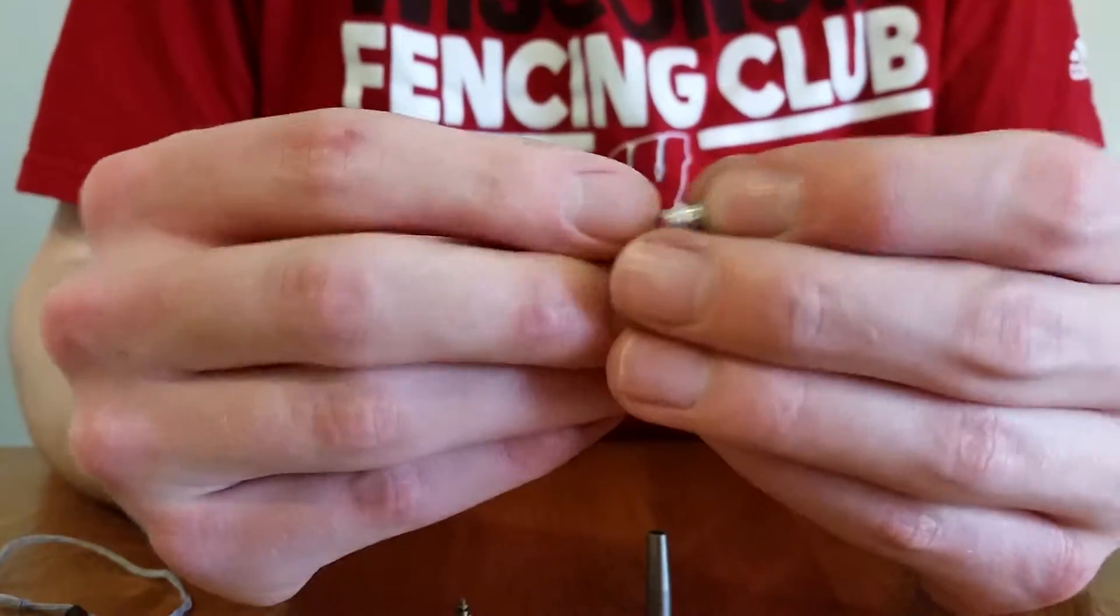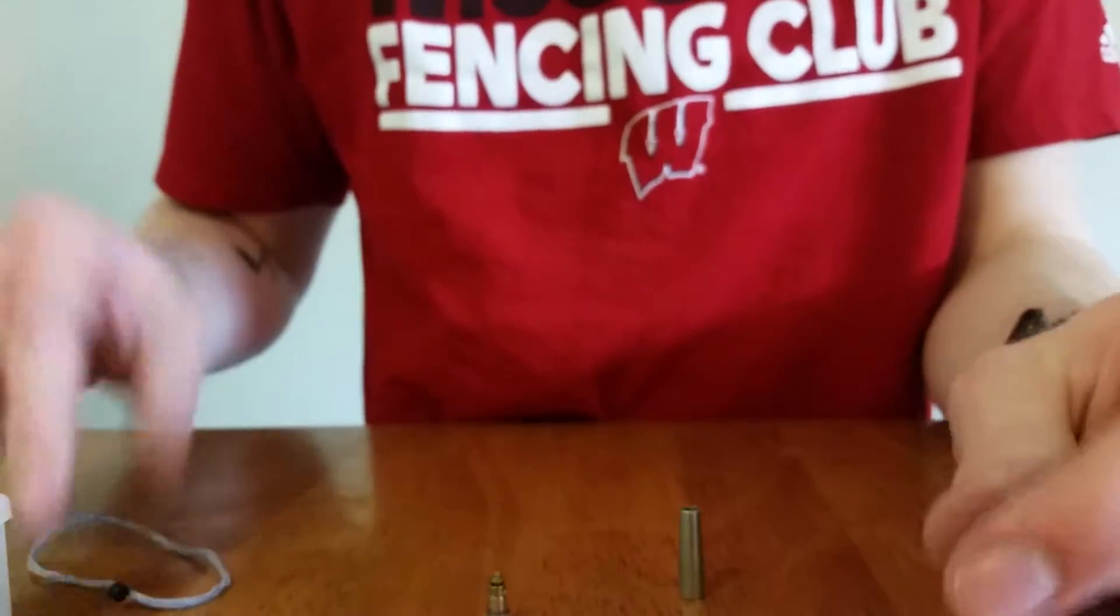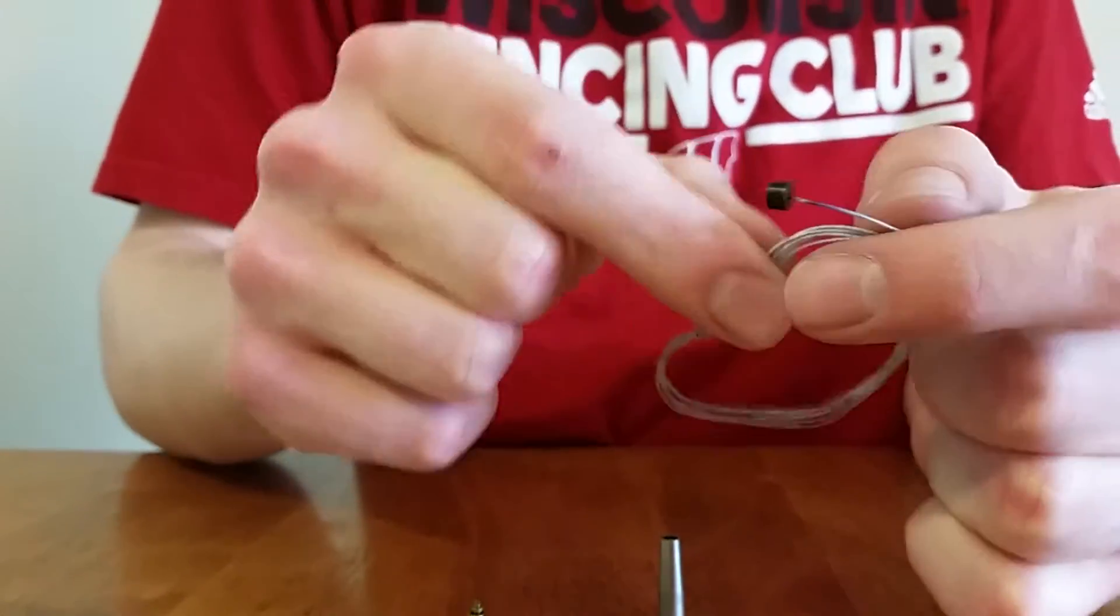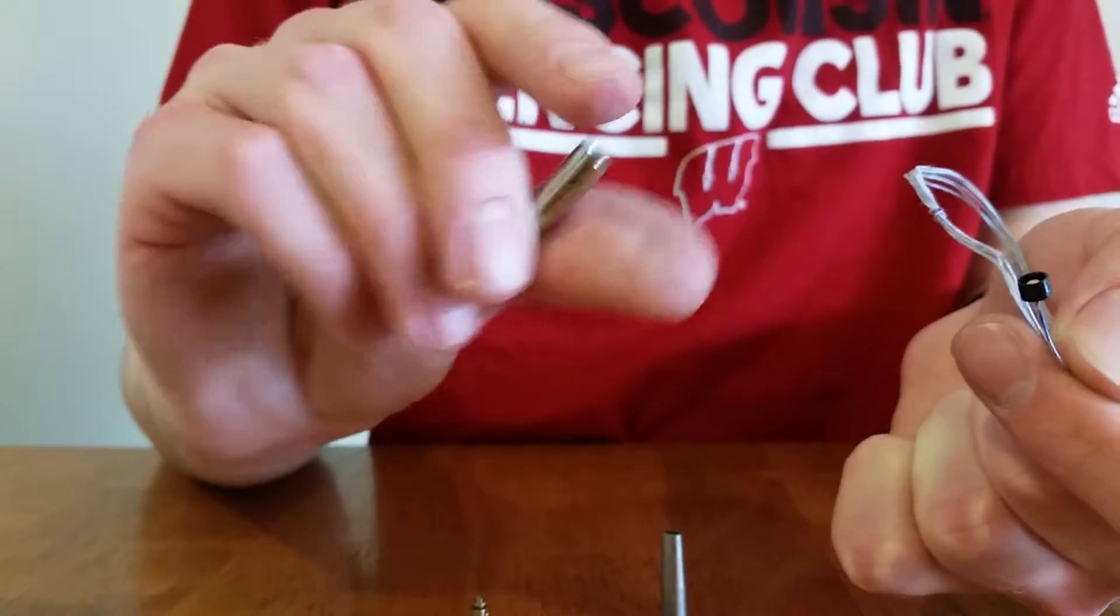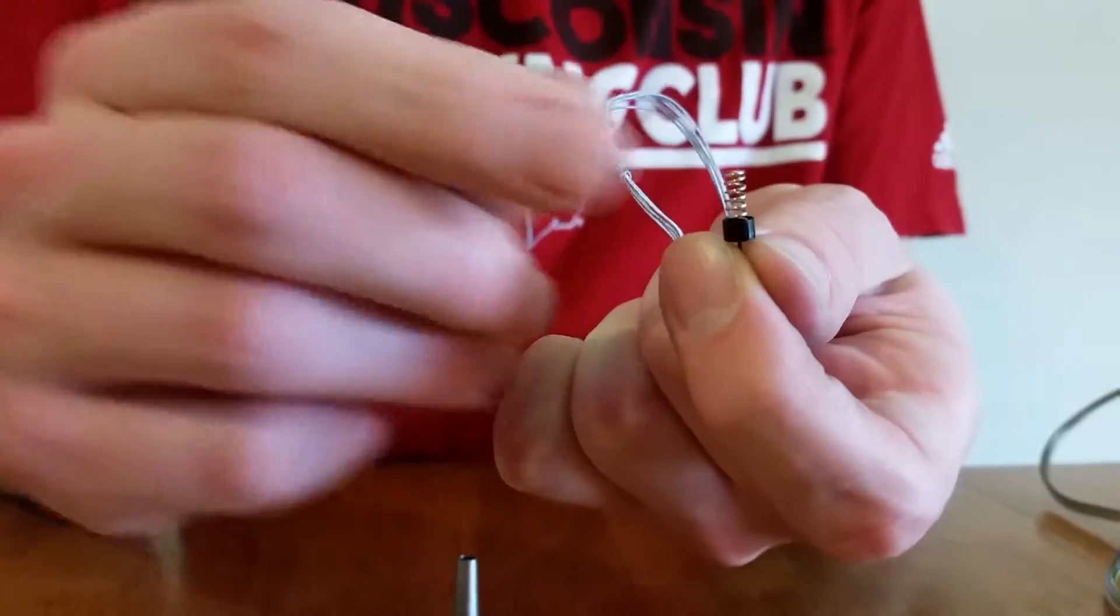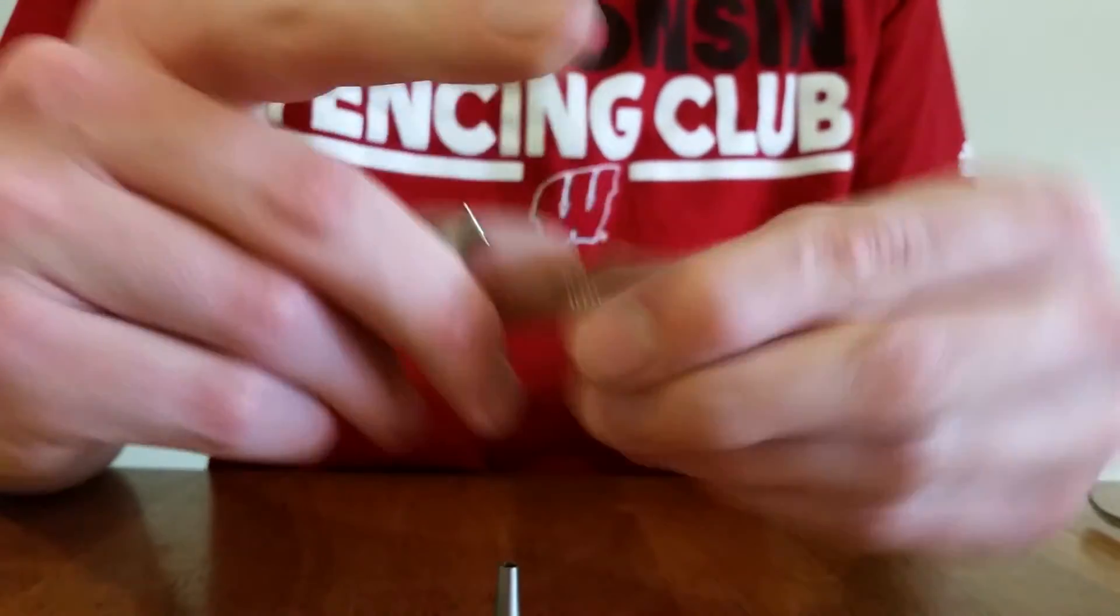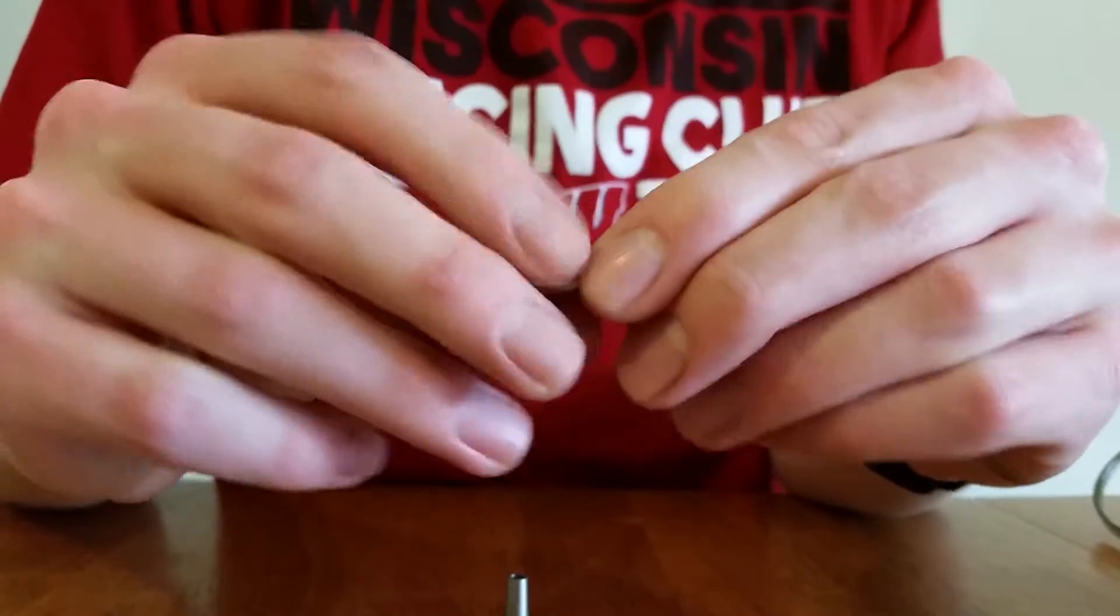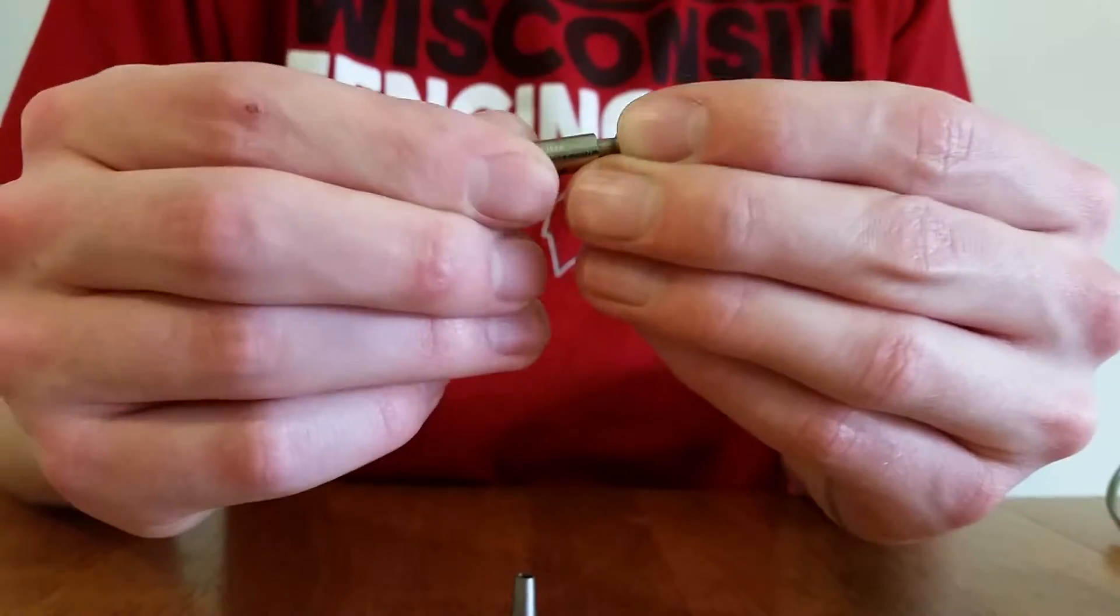So when you're putting together a tip you've got a contact which is what you've got on the end of this wire here on the inside of the barrel. And you've got the spring that sits in the contact here. And then the spring is inside the barrel. And the tip goes in there on top of that.